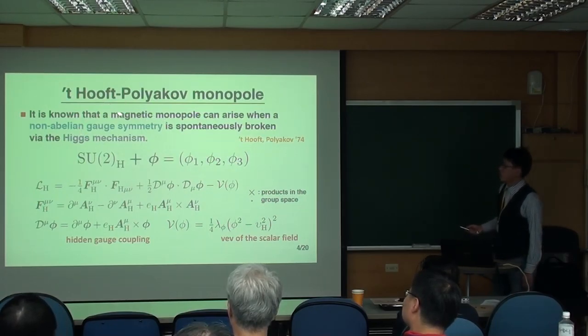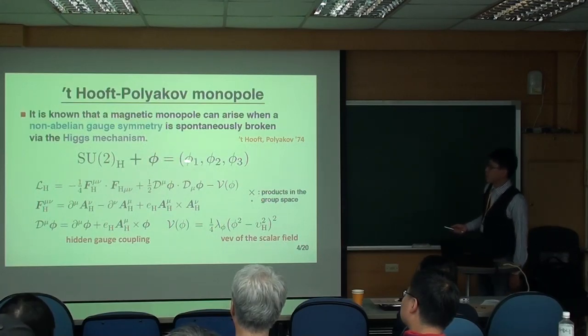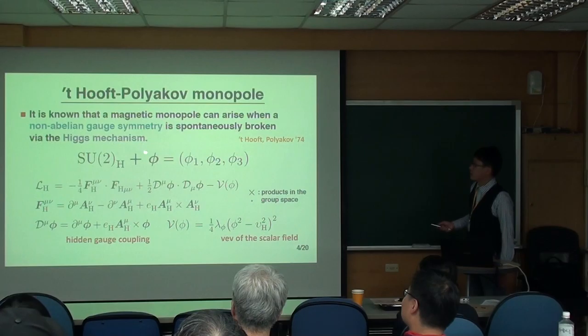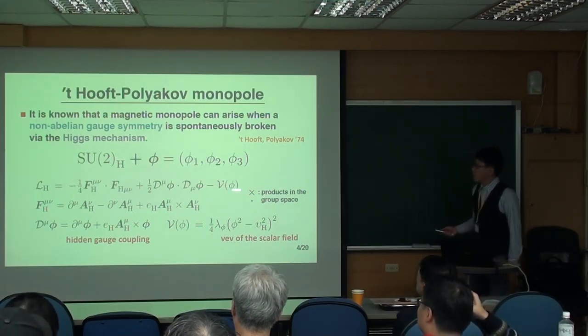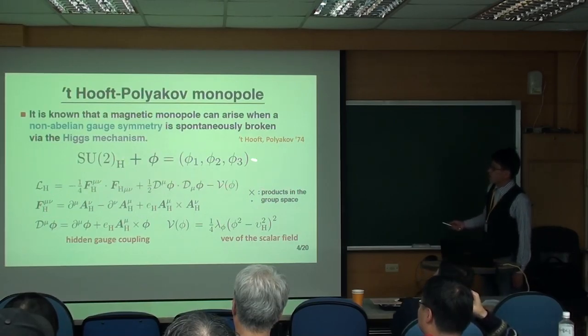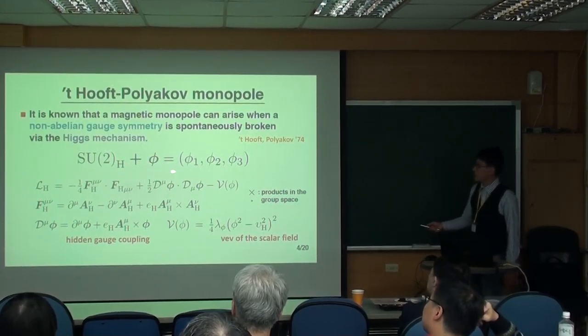So here in our study, we take the so-called 't Hooft-Polyakov monopole as an example. It is known that a magnetic monopole can arise when a non-abelian gauge symmetry is spontaneously broken via the Higgs mechanism.